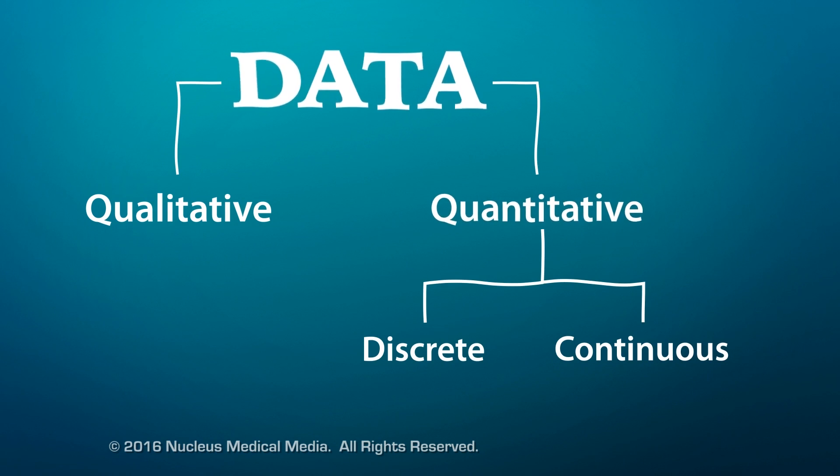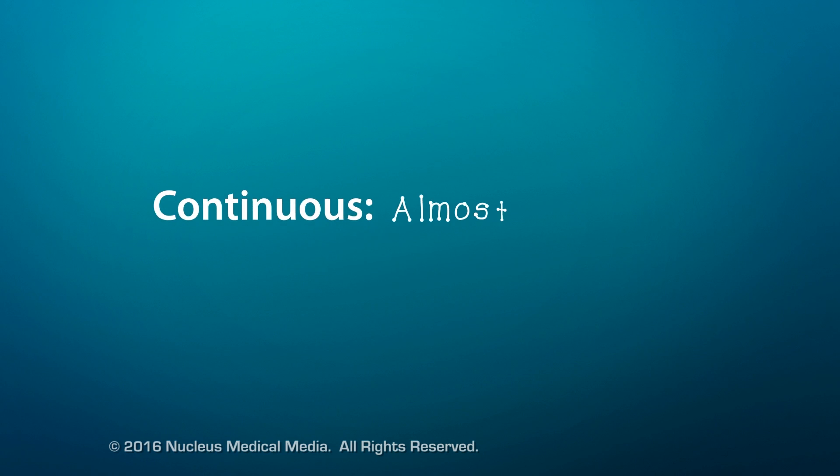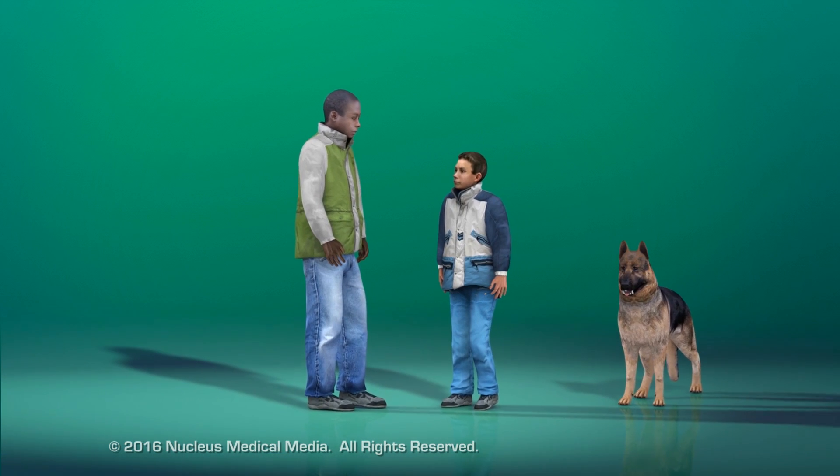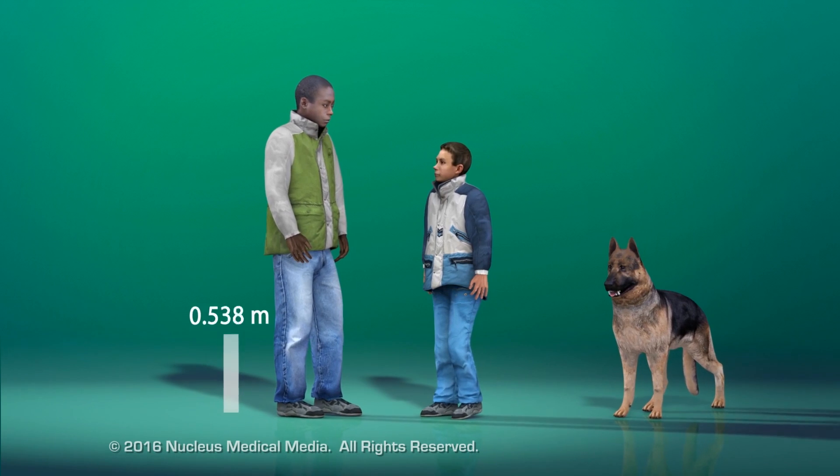In contrast, continuous data can have almost any value. For example, measurements such as height come in a range of continuous data.